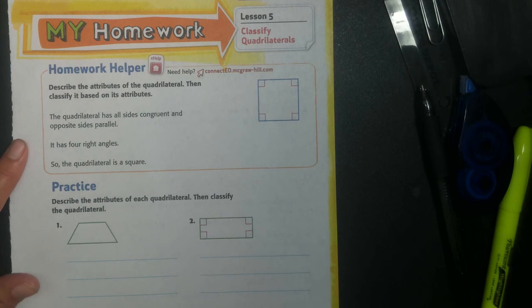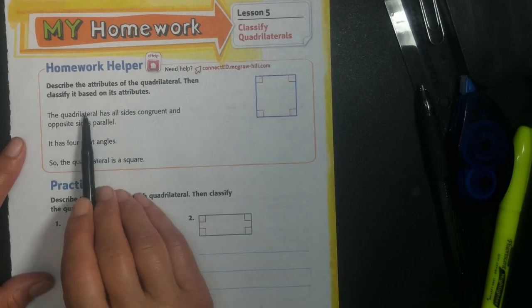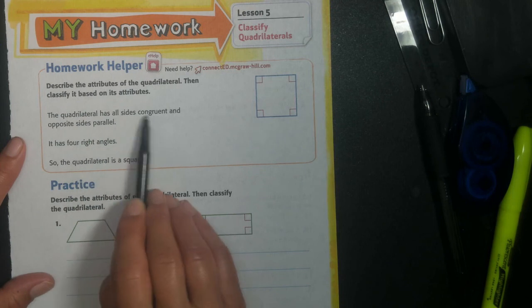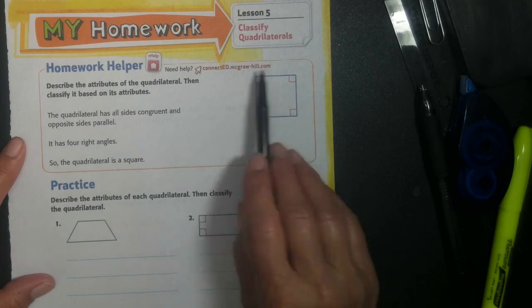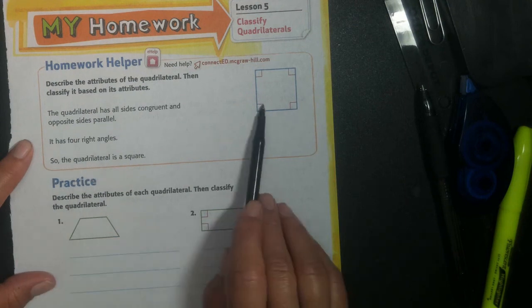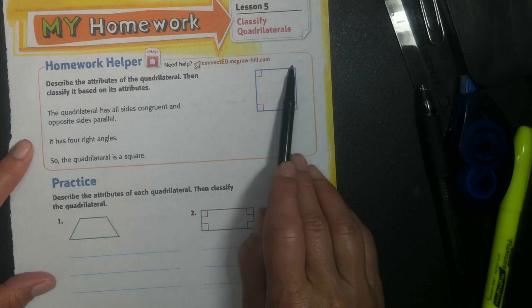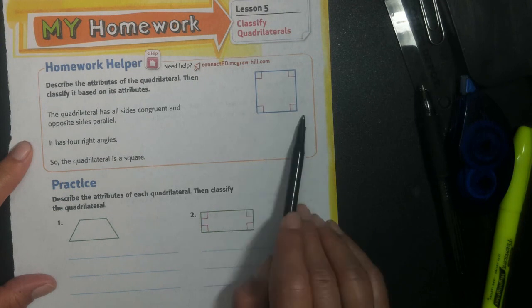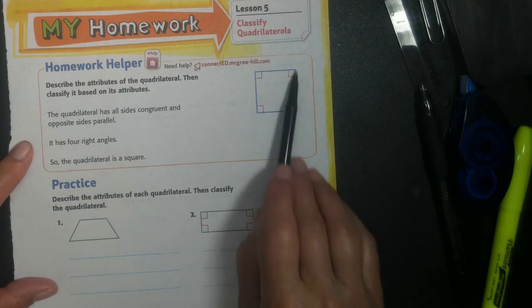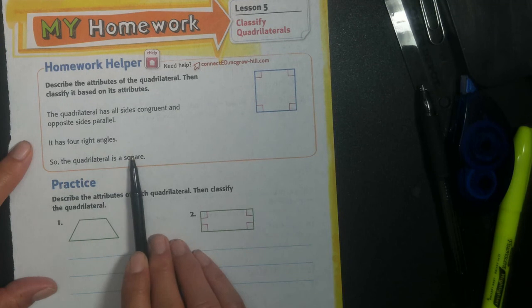So the quadrilateral has all sides congruent, right? They're all equal, and opposite sides are parallel. So when I have parallel lines like this, it classifies my quadrilateral. It has four right angles, right? I can tell it has right angles because they put these little squares there. Let me know that. And all sides are equal, so I know it's a square.